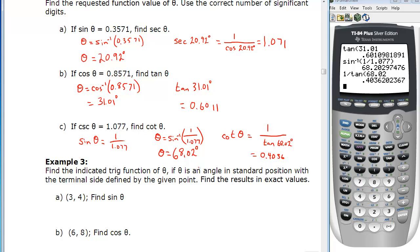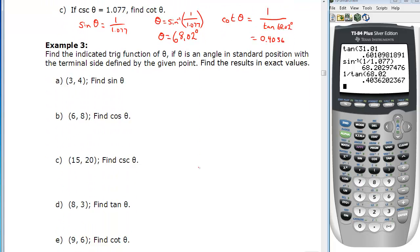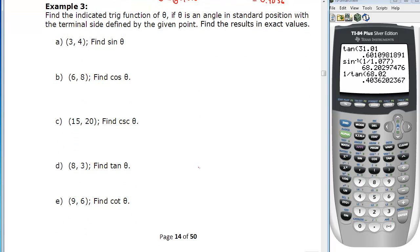We'll continue with example 3. And we'll do the first couple. And then I'll just write the answers for the rest so you have them. In example 3, we're asked to find the indicated trig function if theta is an angle in standard position, so starting from the positive x-axis, remember, with the terminal side defined by the given point. So the first thing to do for each of these is draw a sketch.